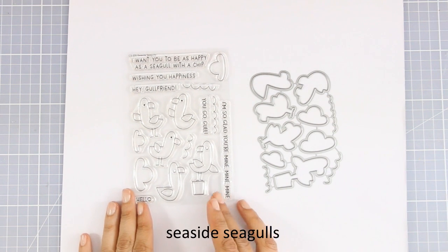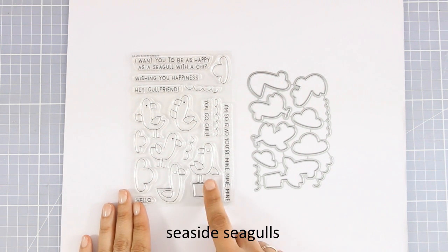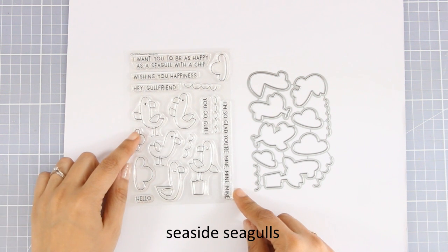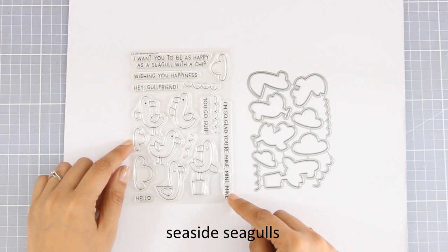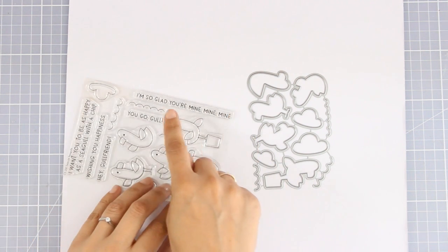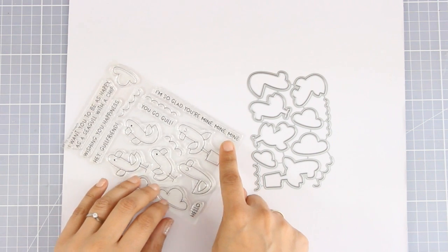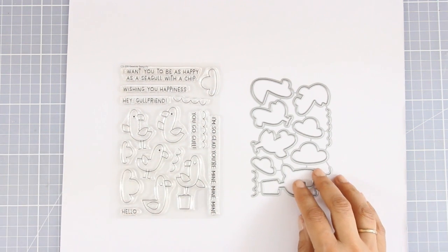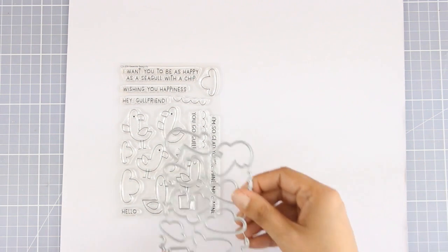Now we're moving to the 4x6 stamp sets. This is called Seaside Seagull. It comes with five adorable seagulls in different positions, some clouds and little details to create your little scene, and there are also lovely sentiments. My favorite is the one that says 'I am so glad you are mine, mine, mine.' And I think this is another adorable stamp set. I don't know how My Favorite Things does it every month, but every release is better than the previous one.